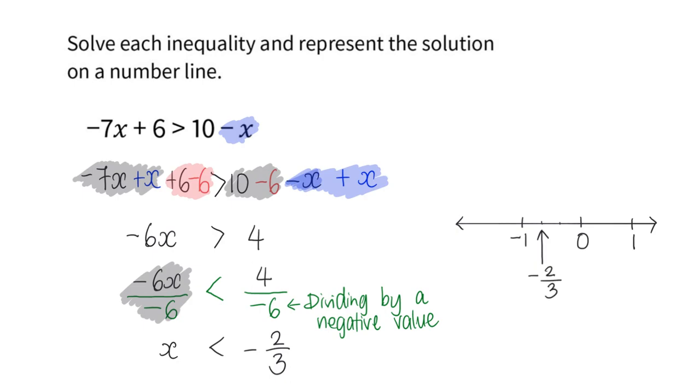So this is how you represent your number line. Circle because there's no equal sign below the inequality, and this is smaller than, so you will have to go by this way.